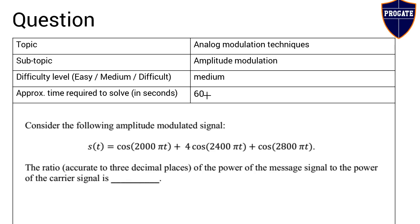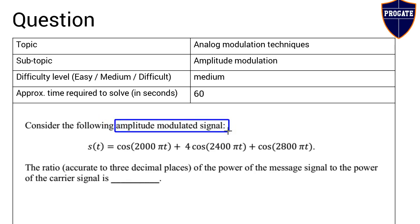In this question, an amplitude modulated signal is given. Amplitude modulation, or AM, is one of the types of analog modulation techniques. In this technique, the amplitude of the carrier signal is varied in accordance with the amplitude of the message signal, so that it carries the information content of the message signal.